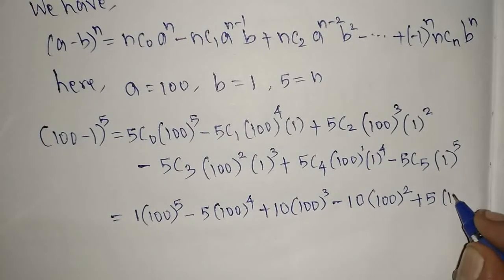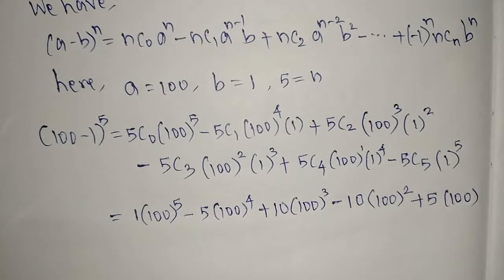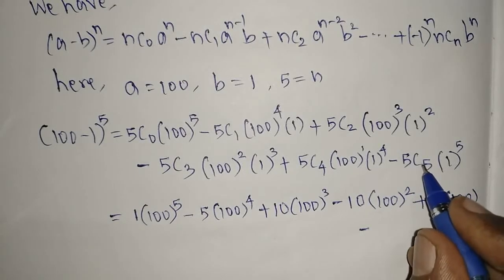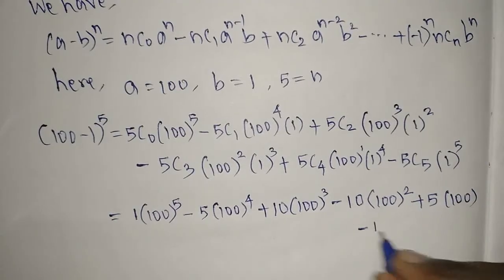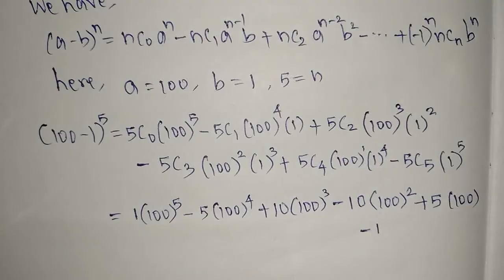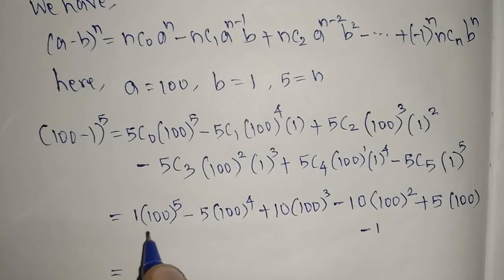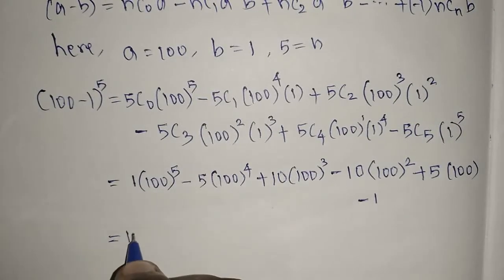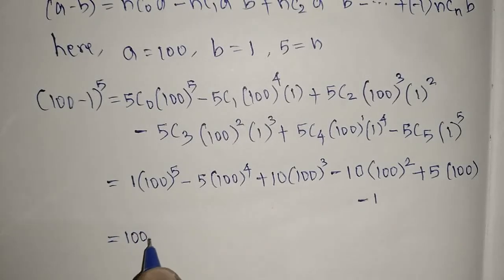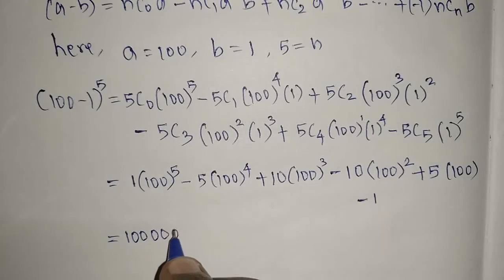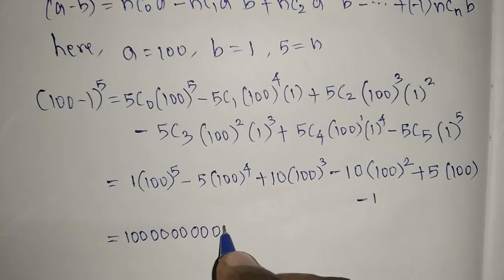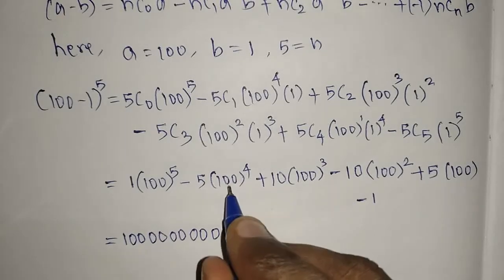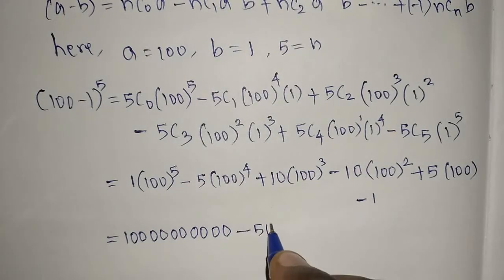Now applying the powers: 100^5 is 10,000,000,000. Then 5 * 100^4 = 5,000,000,000. Wait — 100^5 means writing double-zero five times: 10000000000. And 5 * 100^4 means 5 followed by four pairs of zeros.